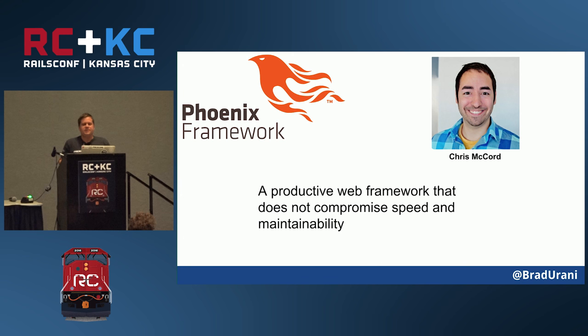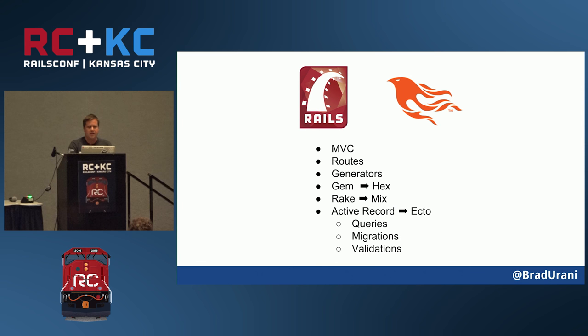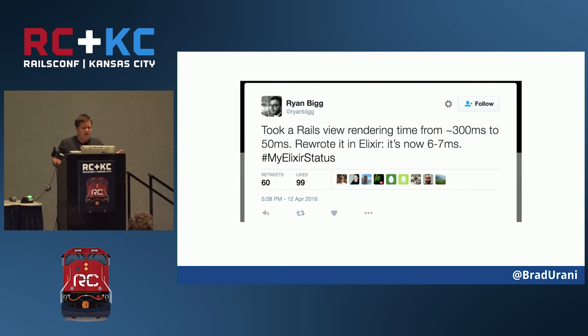Phoenix is an MVC framework built with Elixir — a productive web framework that does not compromise speed and maintainability, made by Chris McCord. It has a lot in common with Rails: it's MVC, it's got routes and generators, a package manager called Hex which takes the best of Gem and Bundler, a task runner called Mix which is like Rake, and an ORM called Ecto with a similar feature set to ActiveRecord — queries, migrations, and validations. It's often an order of magnitude faster than Ruby and Rails.